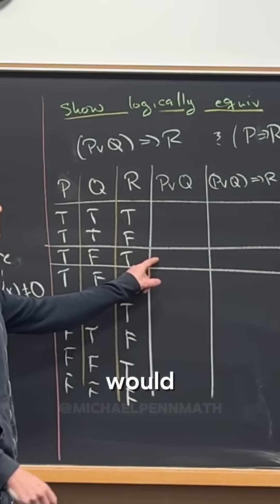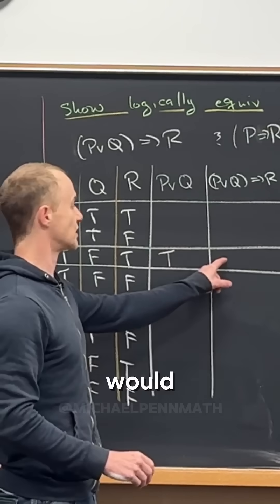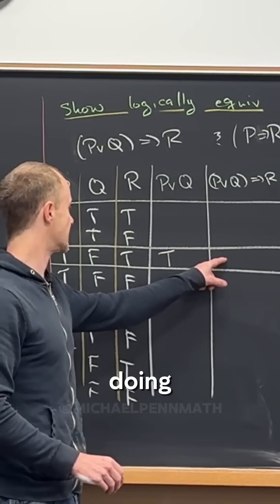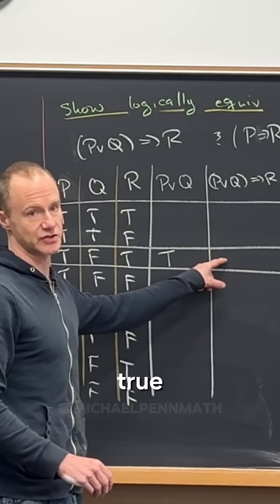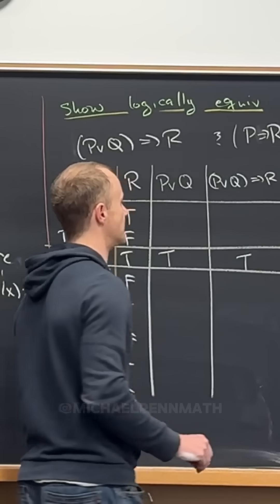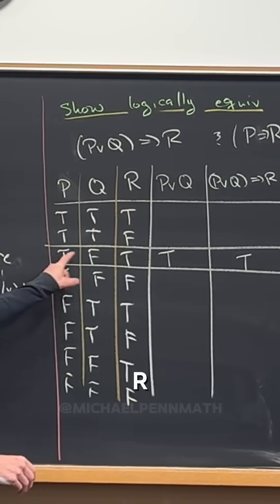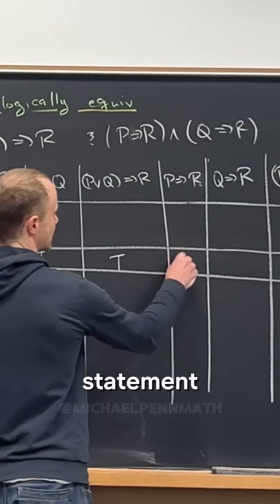Okay, so what would this entry be? It would be a true. Great. And then this entry would also be a true, right? Because we're doing true implies true, but true implies true is a true statement. Yeah, good. And then P implies R. So P implies R is true implies true. That's another true statement.